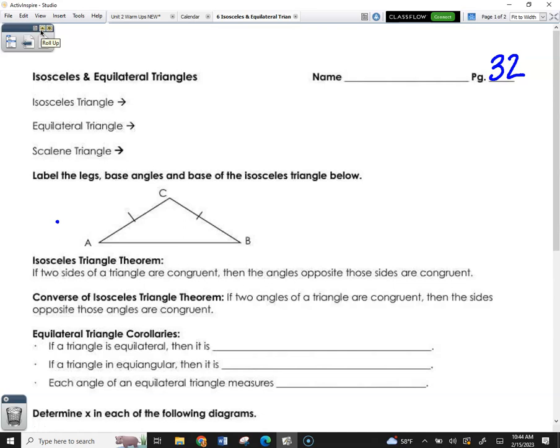Alright, we've got a couple of definitions to write down. You should know these words, though. An isosceles triangle is a triangle with, I'm abbreviating where I can, with two congruent sides.